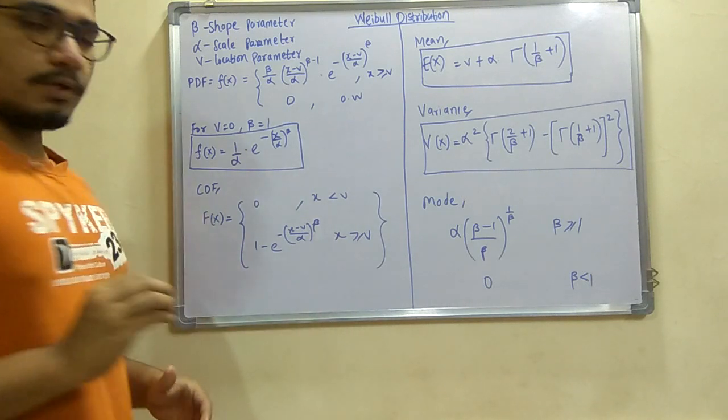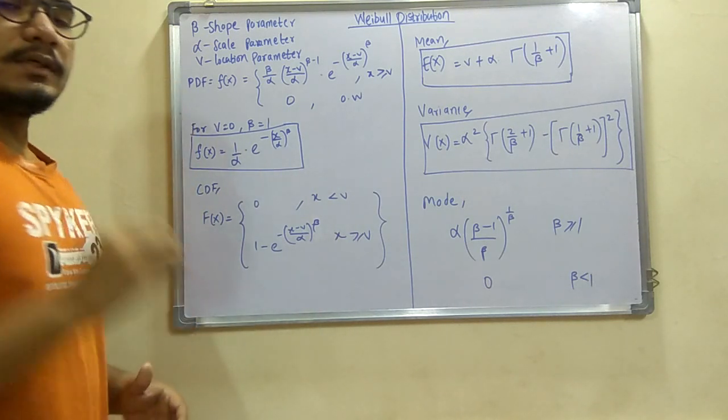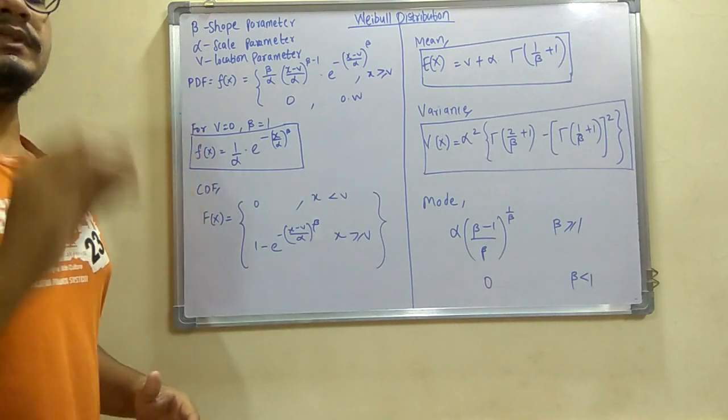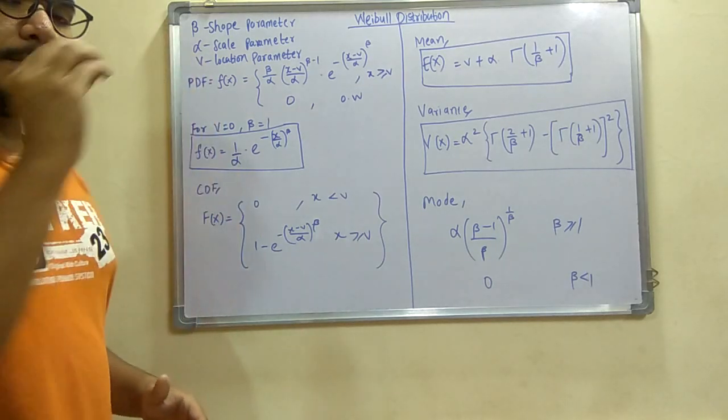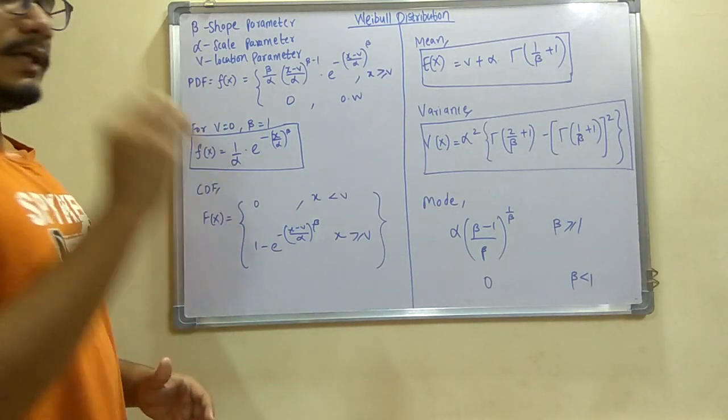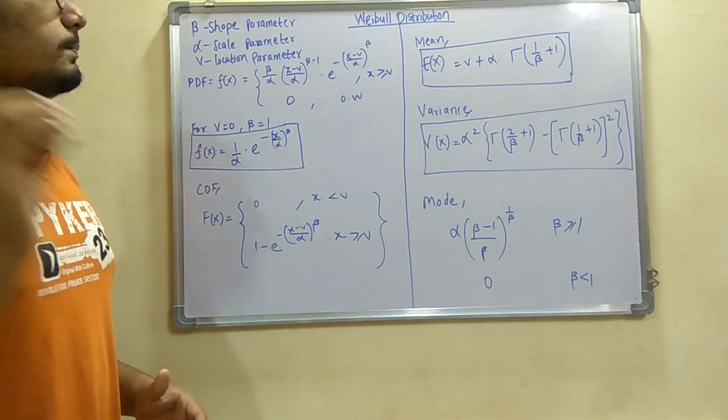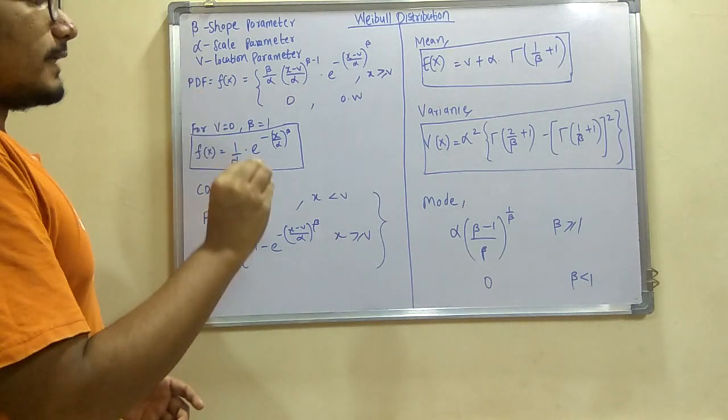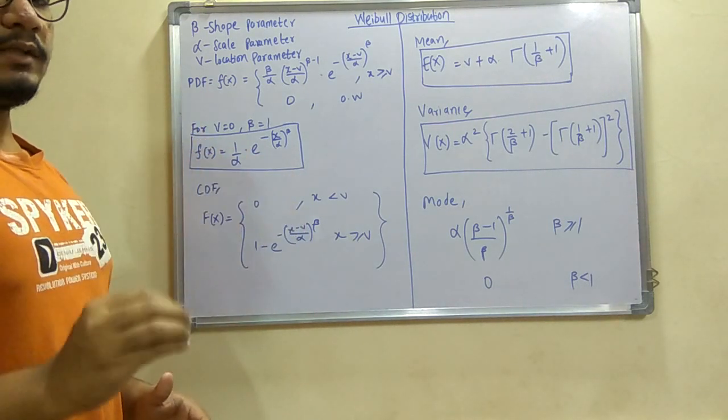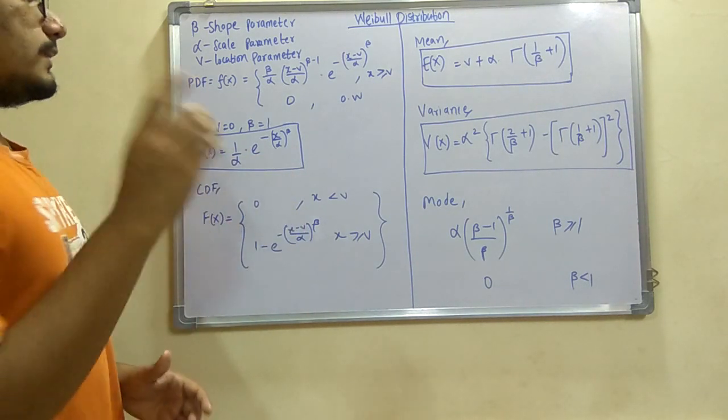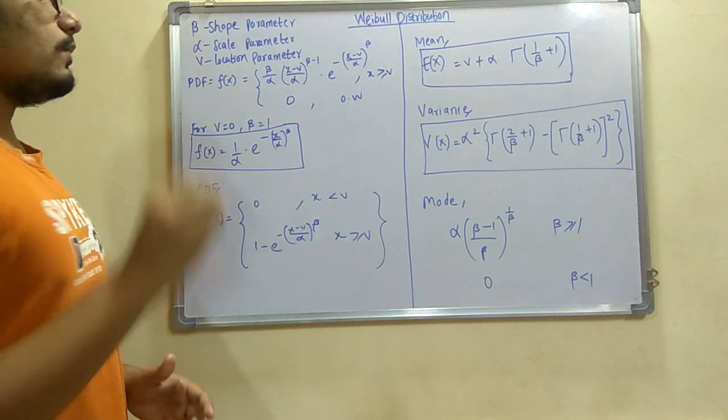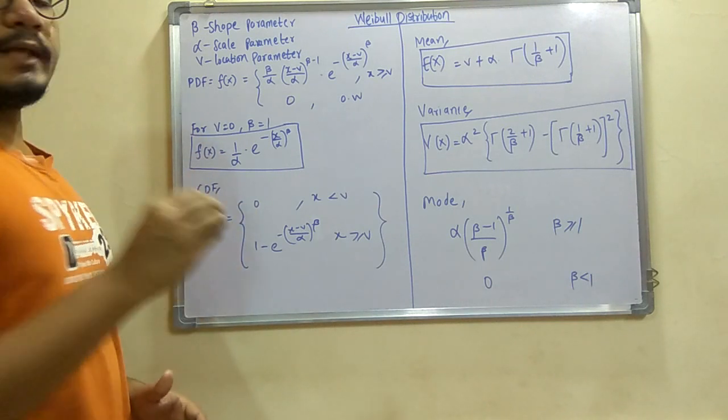Next we have the PDF for this, that is small f(x), which is given as beta divided by alpha multiplied by (x minus V divided by alpha) whole raised to (beta minus 1) multiplied by e raised to minus ((x minus V) divided by alpha) raised to beta. This value of x will be greater than or equal to V, and it's 0 otherwise.